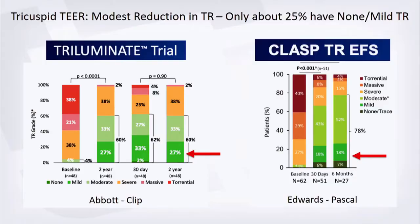Tricuspid TEER — two different devices — have shown that the vast majority of patients still have some degree of residual regurgitation. Only about one in four patients will have mild or no TR; the others will be left with moderate or severe tricuspid regurgitation. That is why there is a need for tricuspid replacement options.